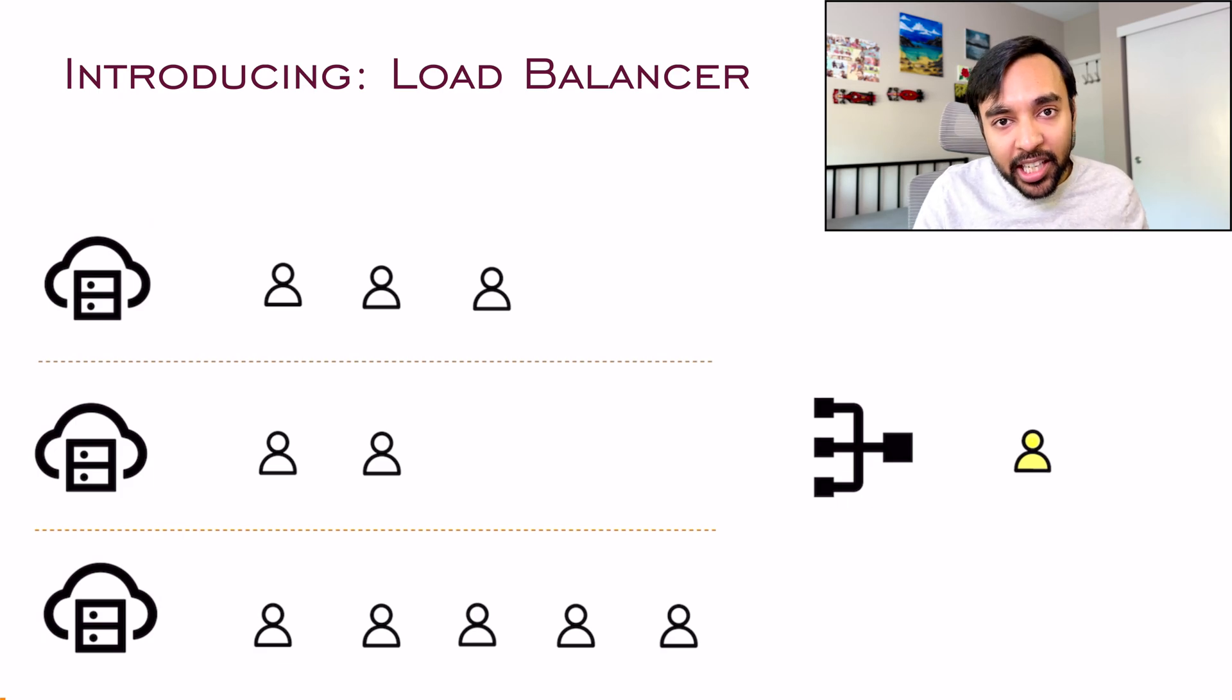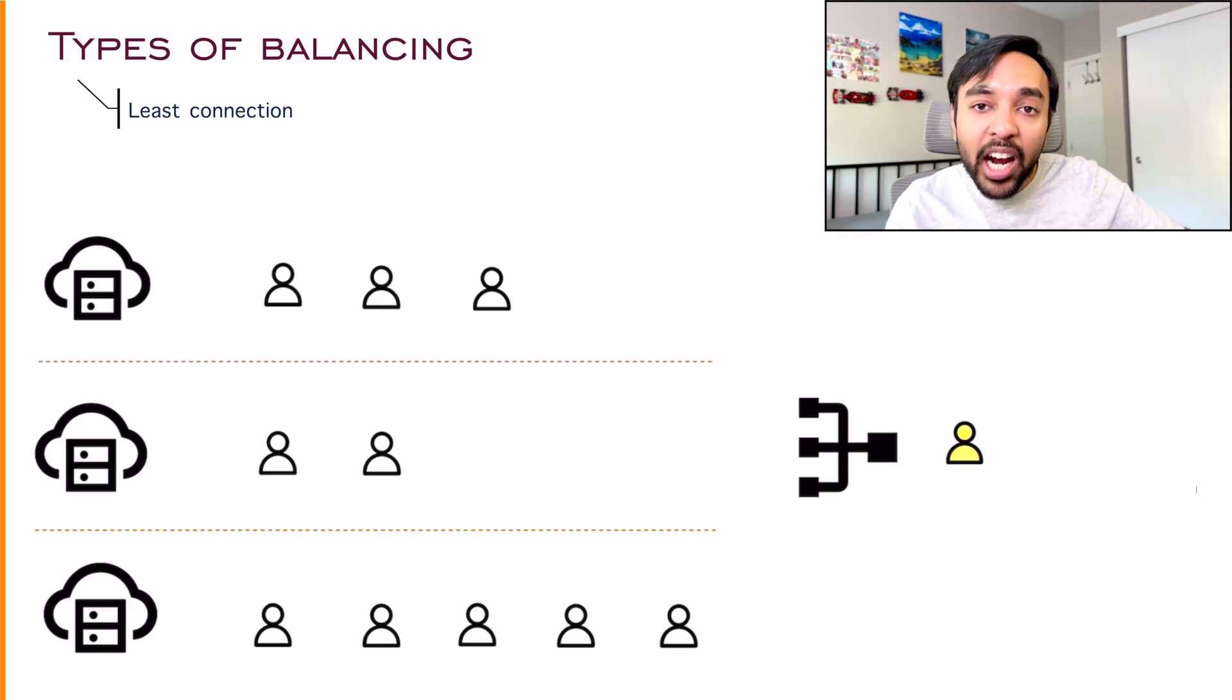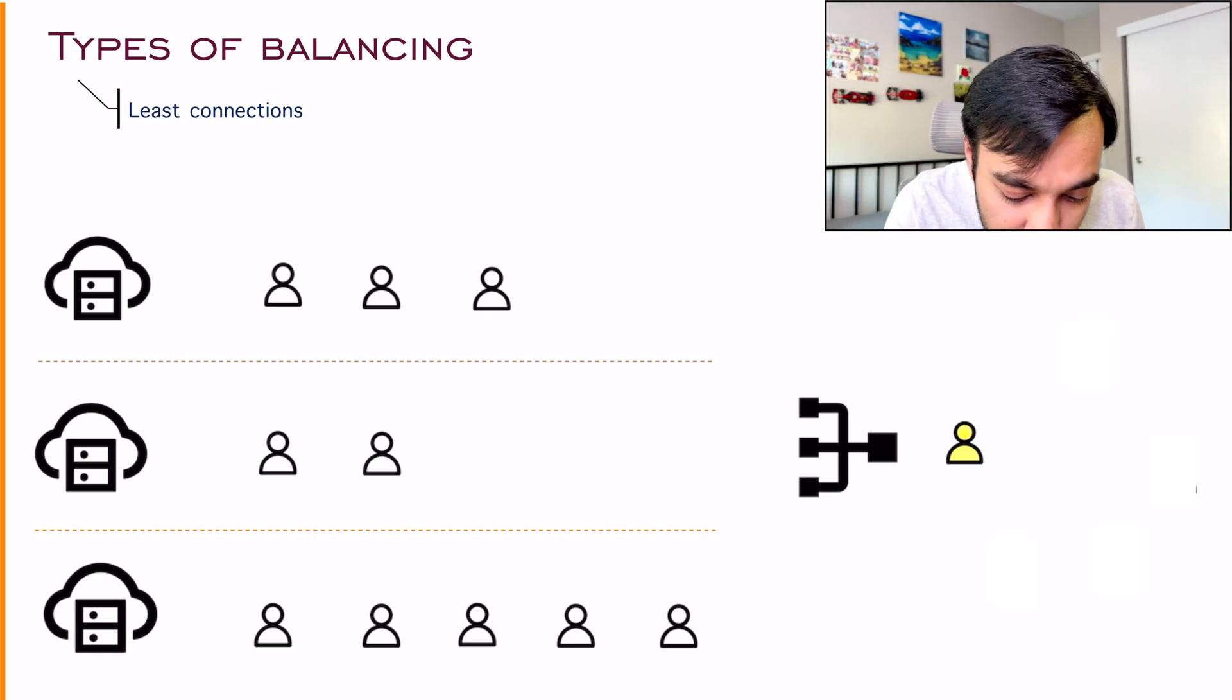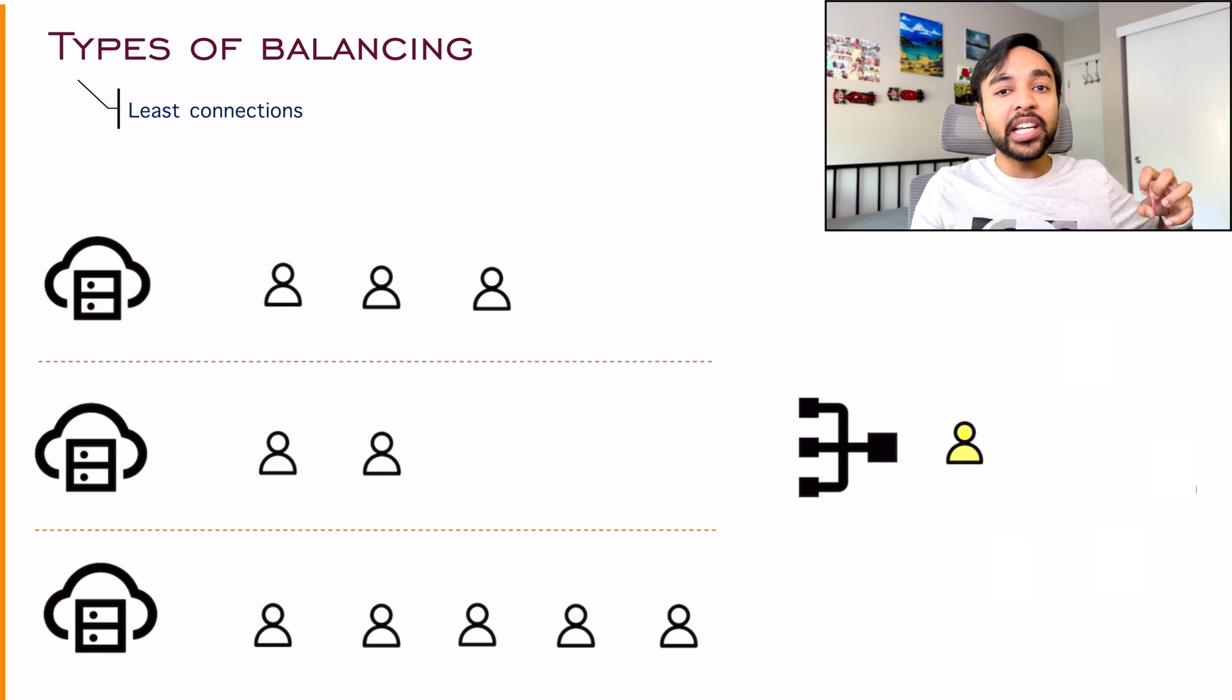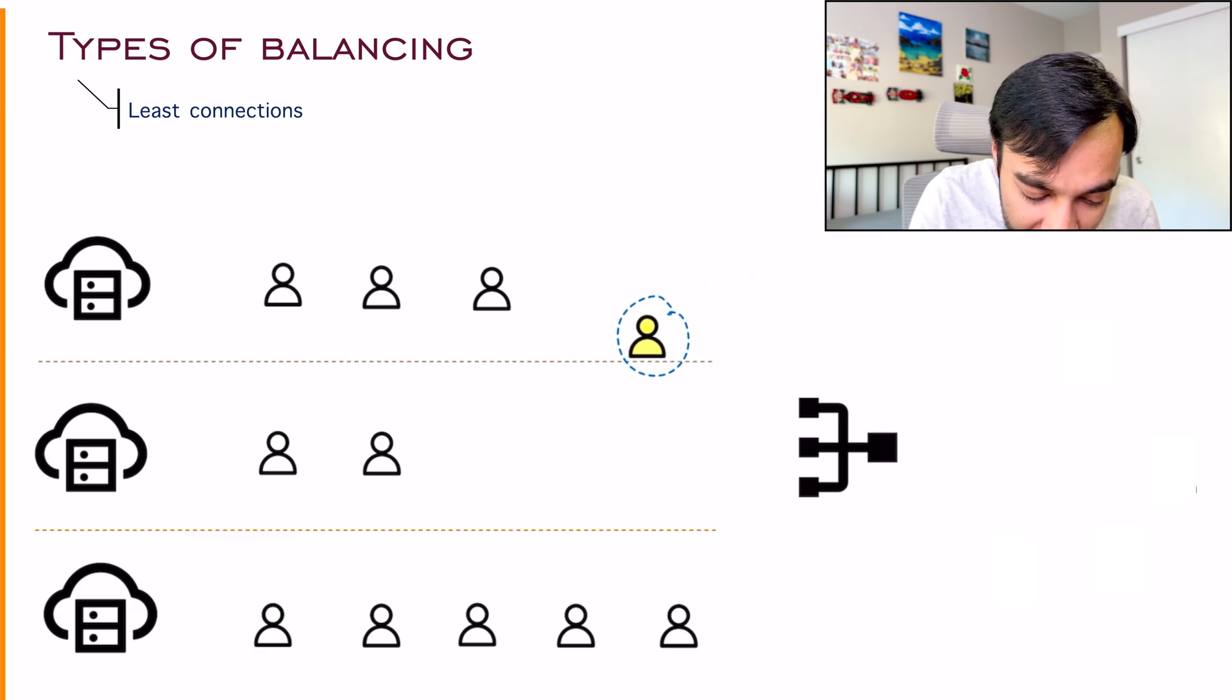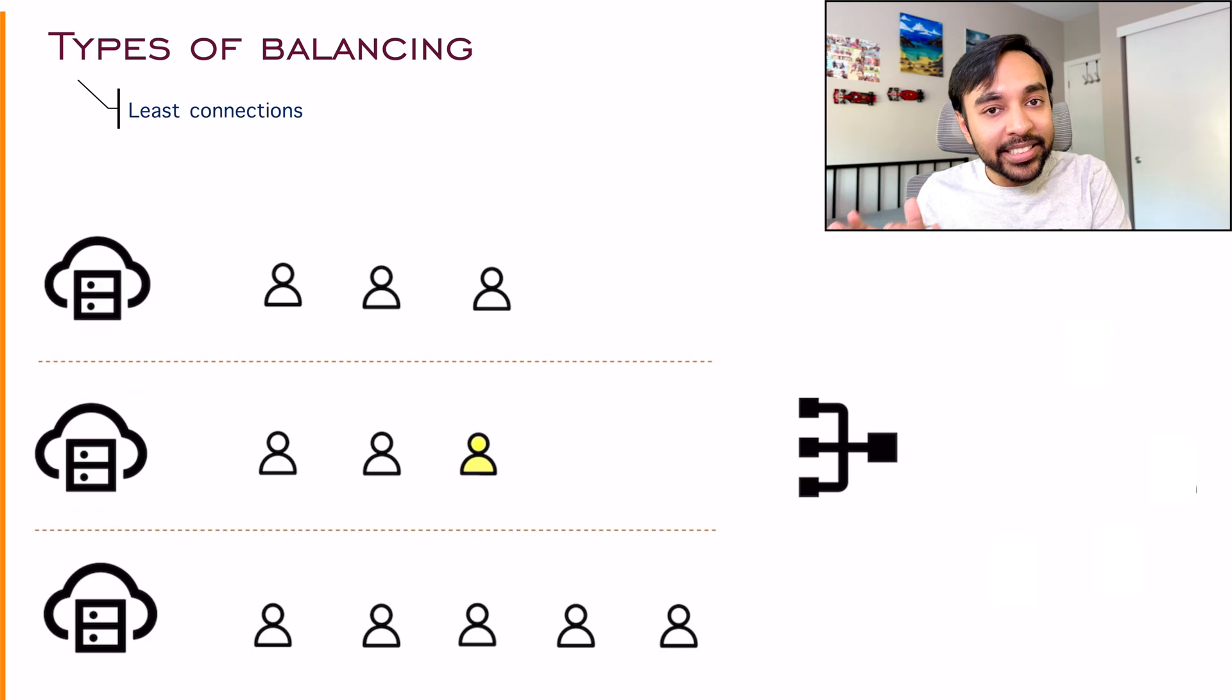So when this new client comes in, how can you make this connection? The most obvious way will be that you start off with a server that has the least number of requests. Very similar to the supermarket situation. So this load balancer knows all of the information about each of the server and how many clients are connected.